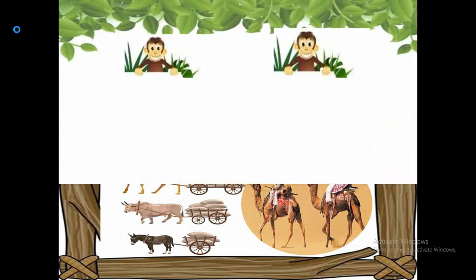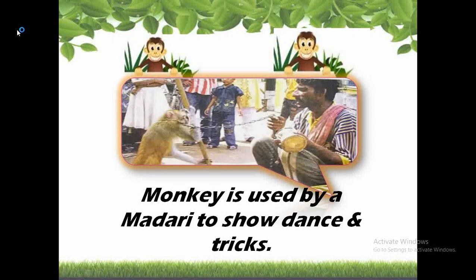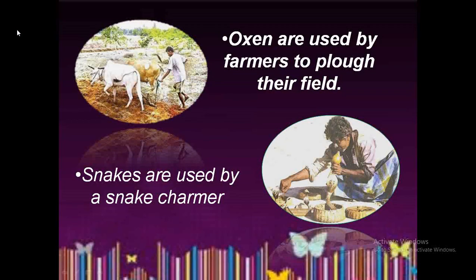A Madari trains monkeys to show dance and tricks. These Madaris train monkeys to entertain people, and in return, people give them money — this is how they earn their livelihood. There are also people who train bears; they remove the nails and teeth of the bear's cub while training them so that they may not harm or bite them. This is how they use bears to entertain people and earn money.